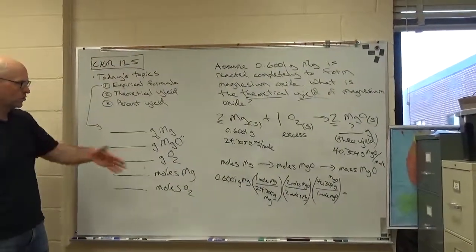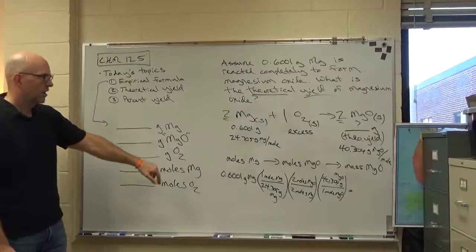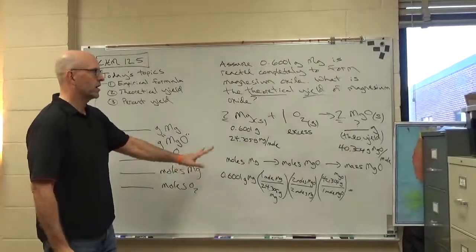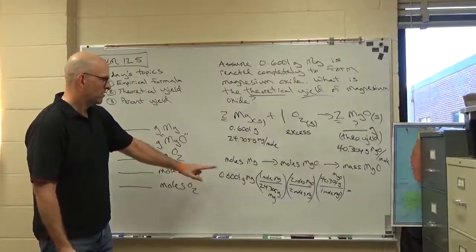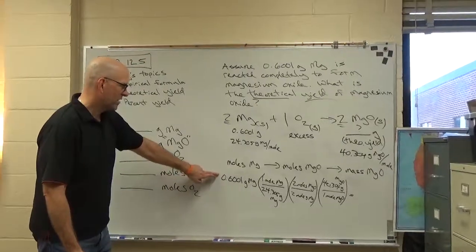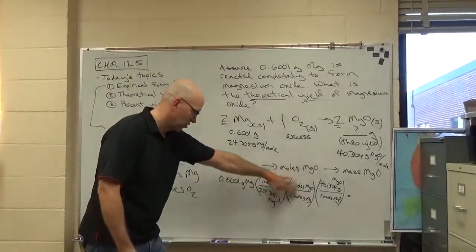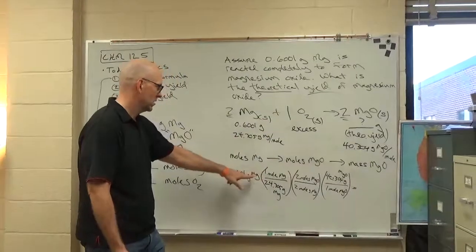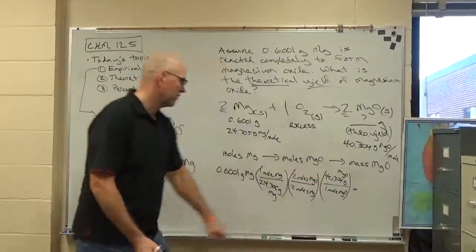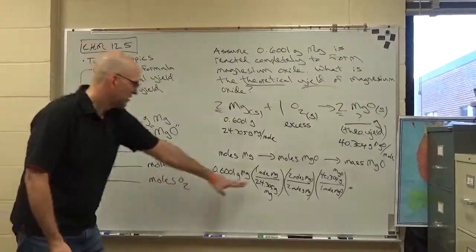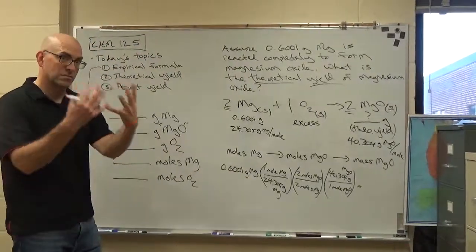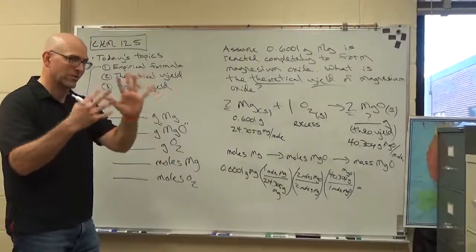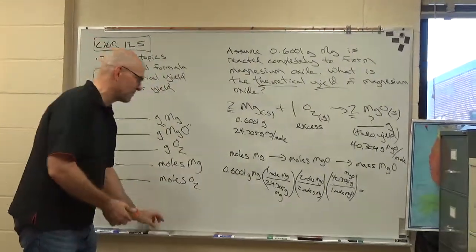All right. When you start to do quizzes and tests, you want to be efficient. So if there's steps you can ignore, ignore them. Okay. So the math is going to be 0.6001 times one, well ignore that because it's two over two, times 40.304 divided by 24.305. That's just putting it in your calculator. That's not showing that you understand what's going on, that's just getting it properly in there.